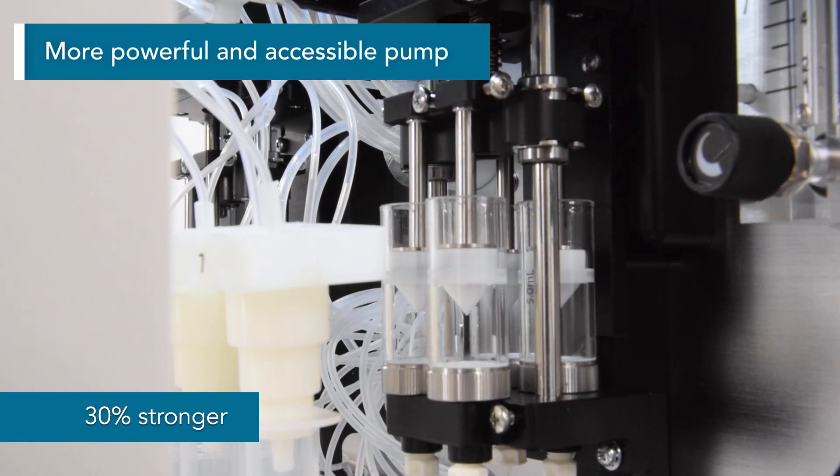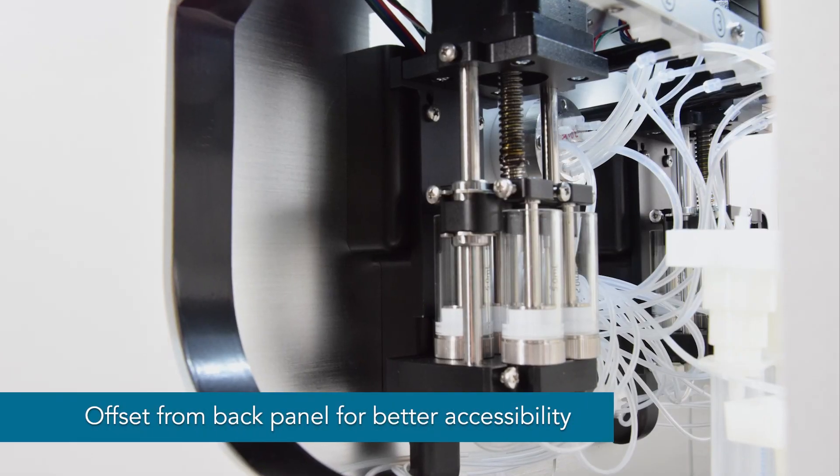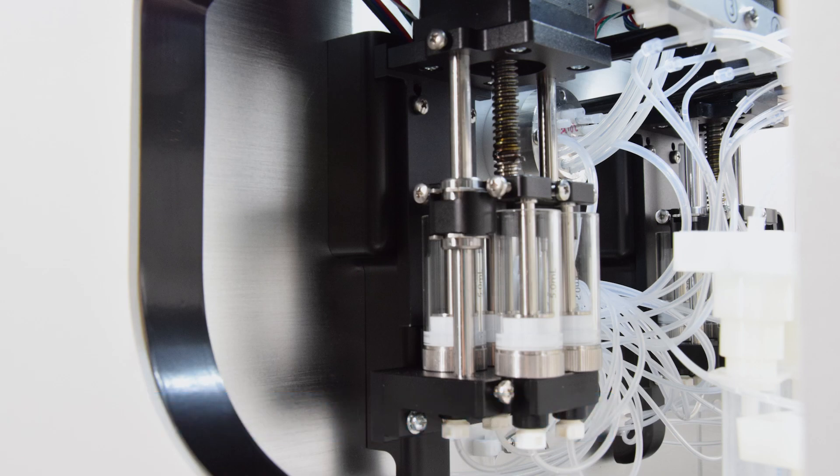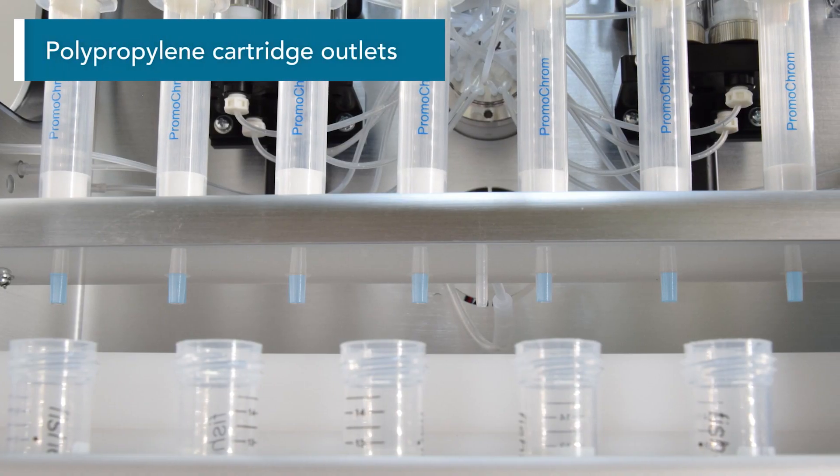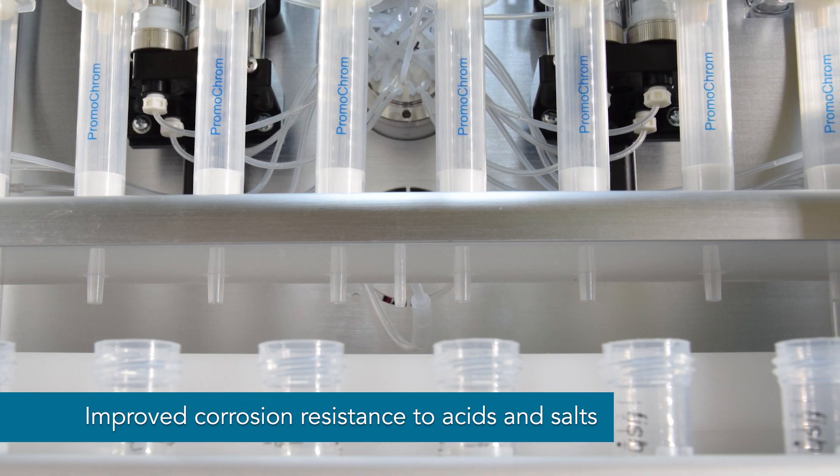Our beast pump just got another 30% boost in strength. By offsetting the pumps from the back panel, there is better accessibility. Polypropylene cartridge outlets offer improved corrosion resistance to acids and salts.